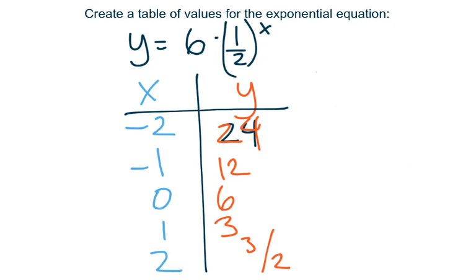I can similarly plug in the other x values: -1, 0, 1, and 2. I find that at x = -1, y equals 12. At x = 0, y equals 6. At x = 1, y equals 3. And at x = 2, y equals 3/2.